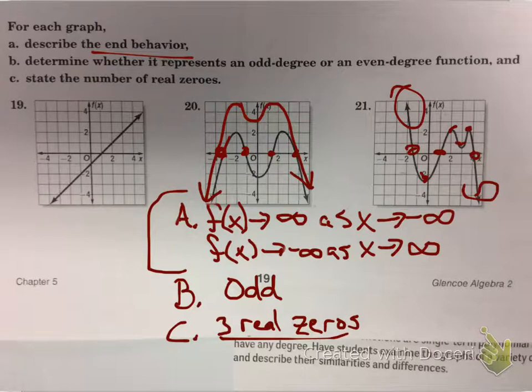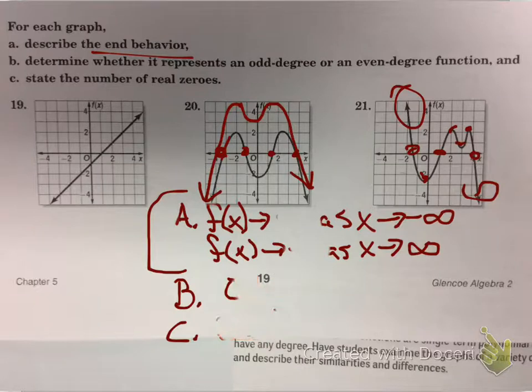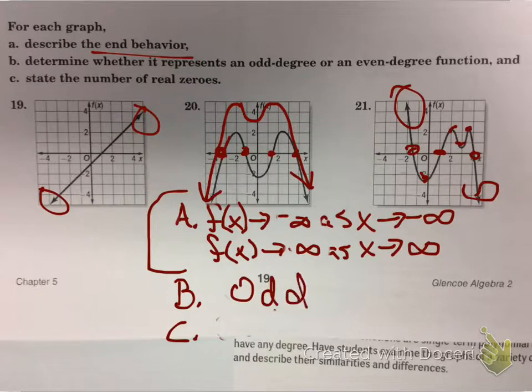So if I were to do number 19, where is x going to? As we go to the left, it's going to negative infinity. And as we go to the right, it's going to positive infinity. That means it has to be odd. And this one actually only has one real zero because it's linear. That one's kind of easy. Now it won't be that nice. So there you go, there's that right there.